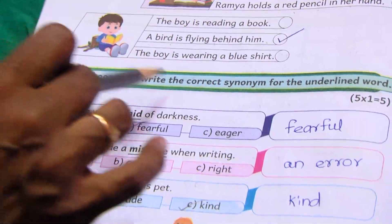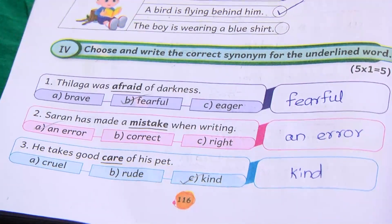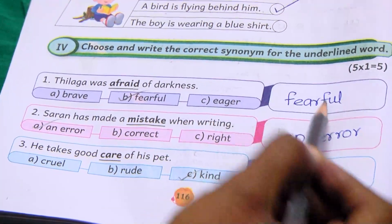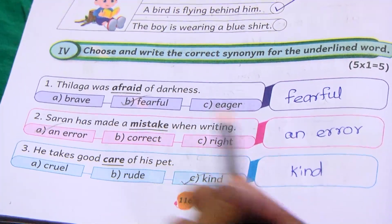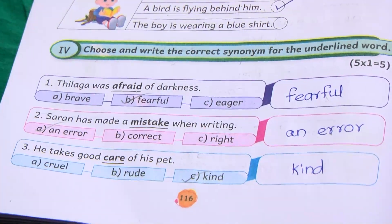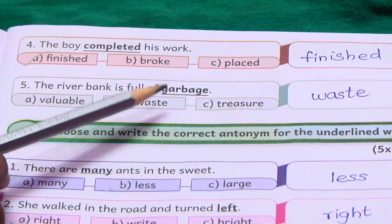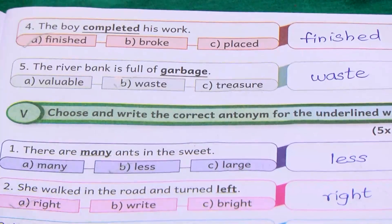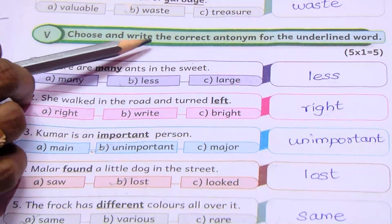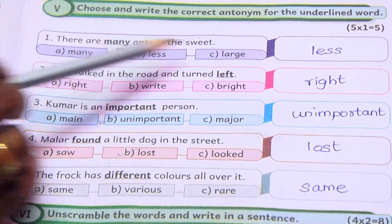Next one, choose and write the synonym. Upright — Fearful. Mistake — An error. Care — Kind. Completed — Finished. Garbage — Waste.